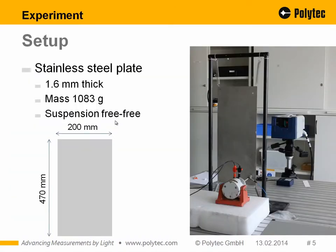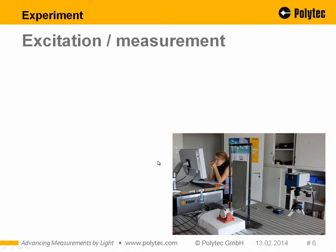To demonstrate the effect, we conducted an experiment. We took a stainless steel plate with a thickness of 1.6 millimeters and a mass of about one kilogram, suspended free-free. The dimensions were 200 mm by 470 mm — just a small section of plate. The setup included the scanning laser vibrometer, the steel plate, an electrodynamic shaker, the scanning vibrometer electronics, and the operator.